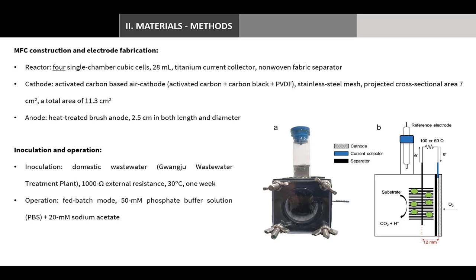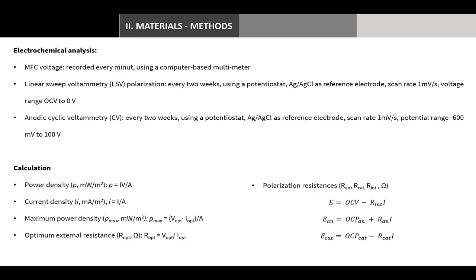A brush anode was heat treated and installed horizontally as close to the cathode as possible to maximize performance. Anodic compartments were inoculated with wastewater, and MFCs were operated with a fixed external resistance of 1000 ohms at room temperature. After one week, MFC systems were operated in a fed-batch mode using 50 millimolar phosphate buffer solution as medium, and MFC voltage was measured every minute.